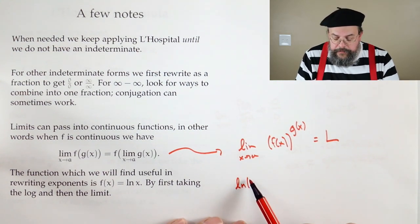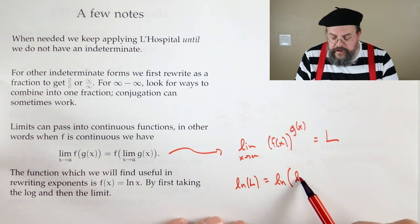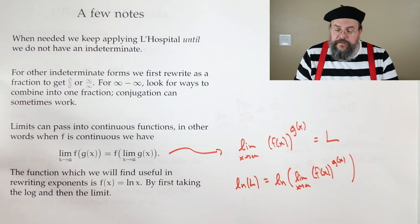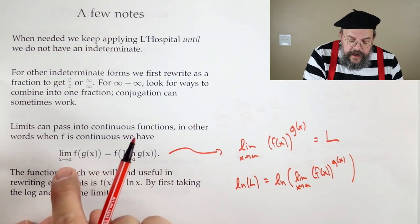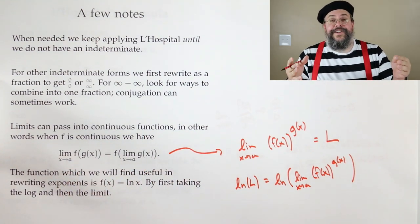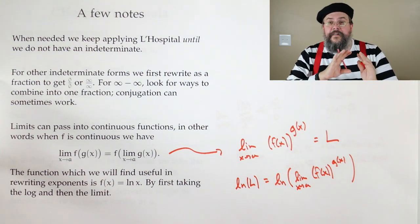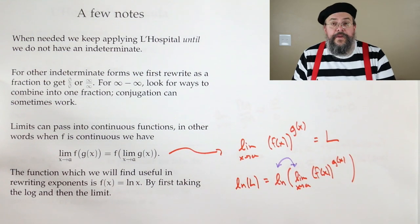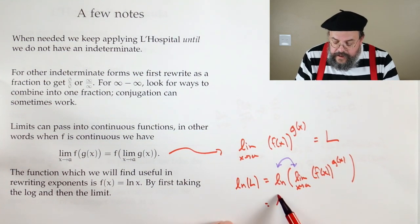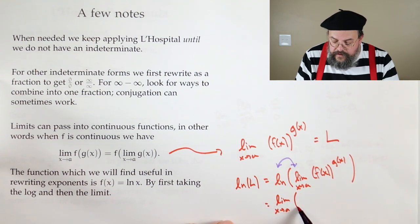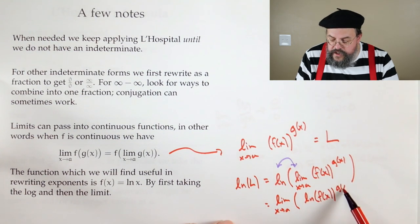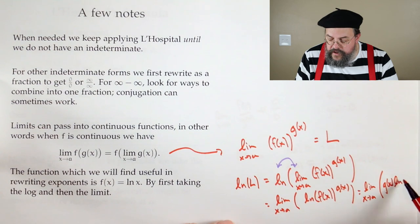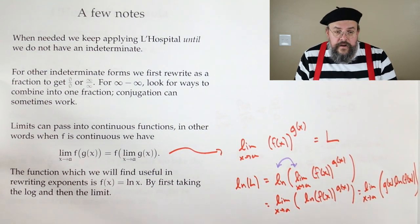Then the natural log of L, that's the natural log of the limit as x approaches a, of f of x to the g of x. So I haven't really done much. I've taken the log of both sides. Now, here's where we say, aha, the log is a nice function. It's a continuous function. And therefore, we can push the log past the limit. So, the idea is we're going to swap the log and the limit. And so, what we get is that this is really the limit as x approaches a of the natural log of f of x to the g of x, which is the limit as x approaches a of g of x times the natural log of f of x. Good.